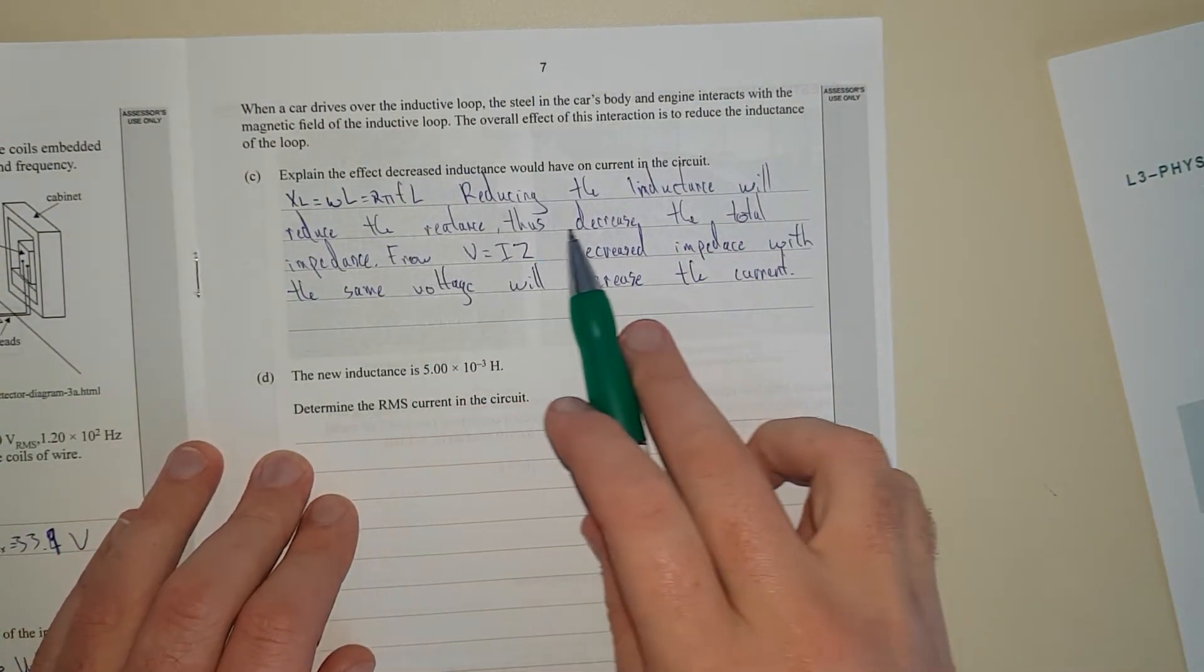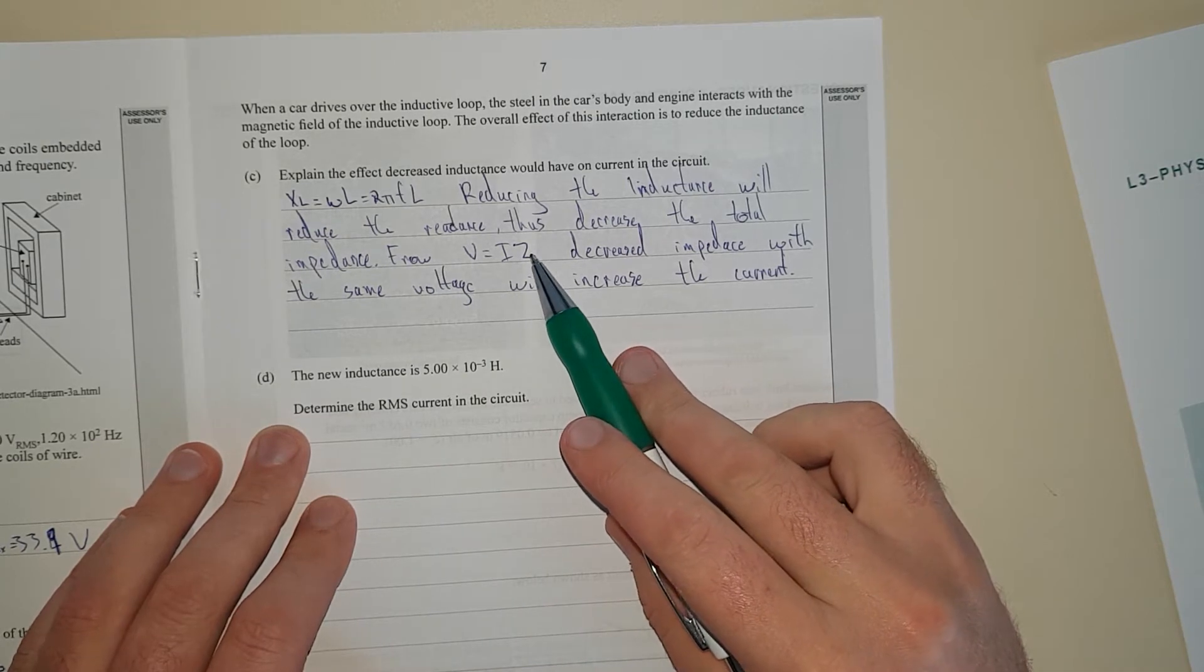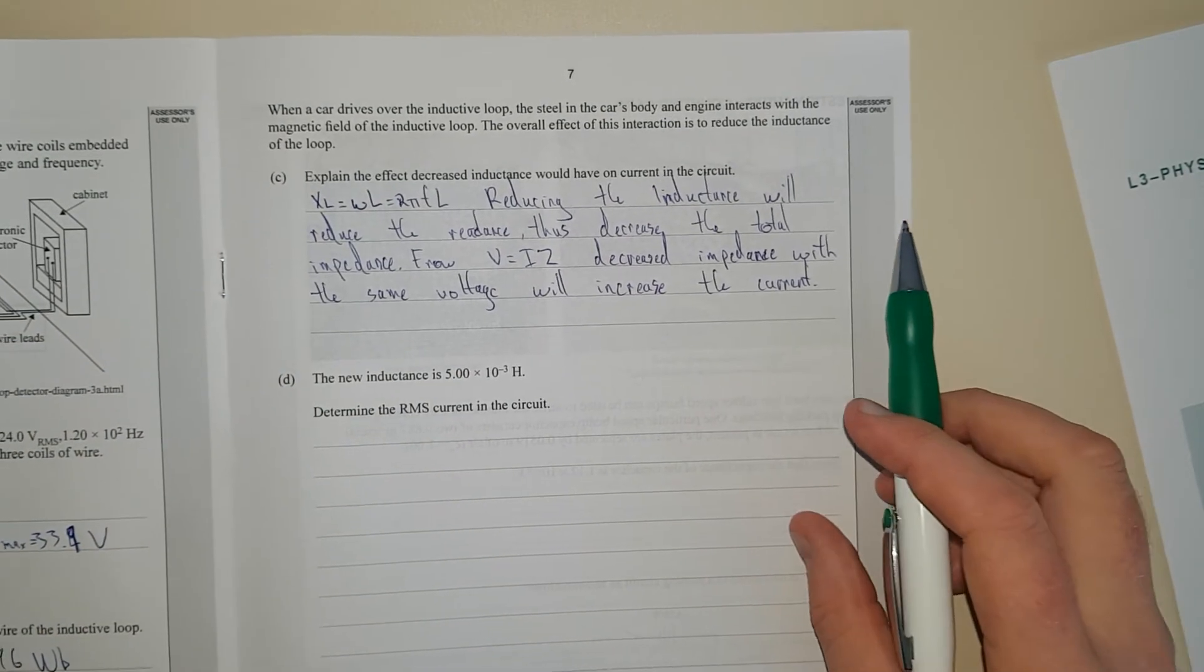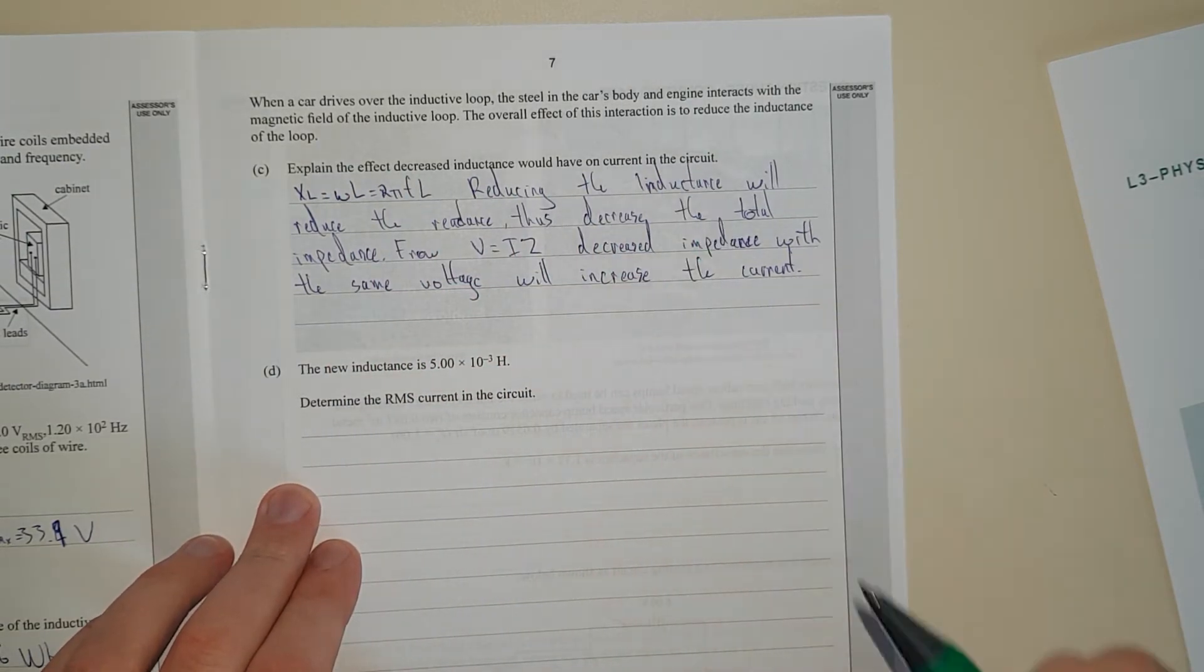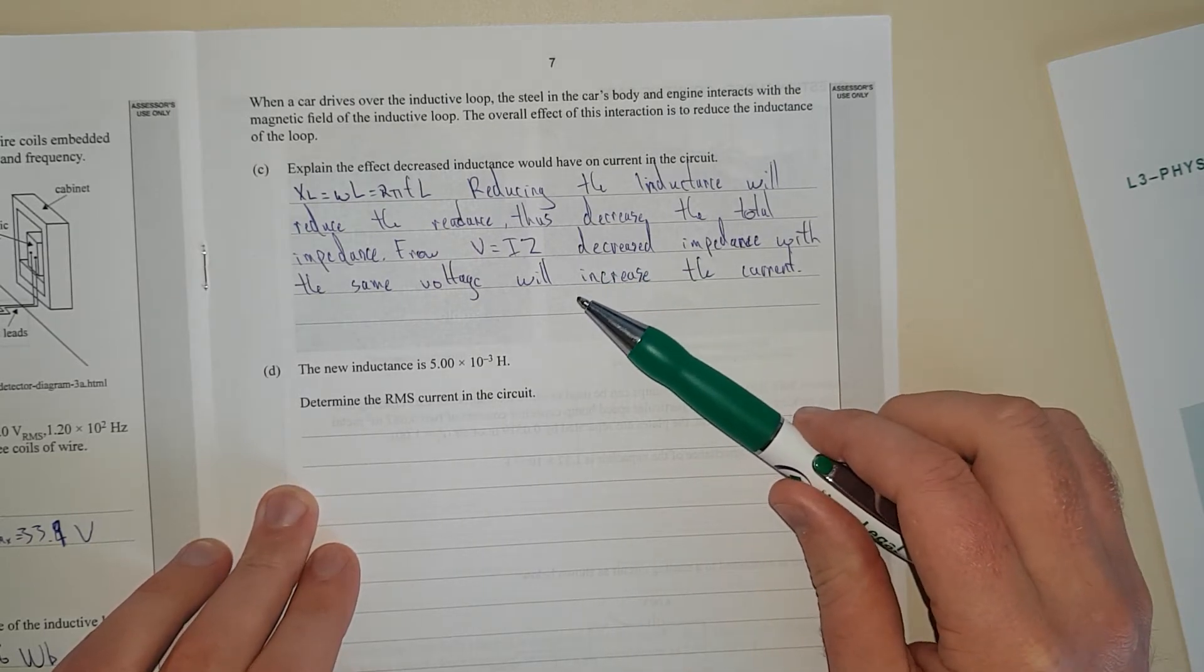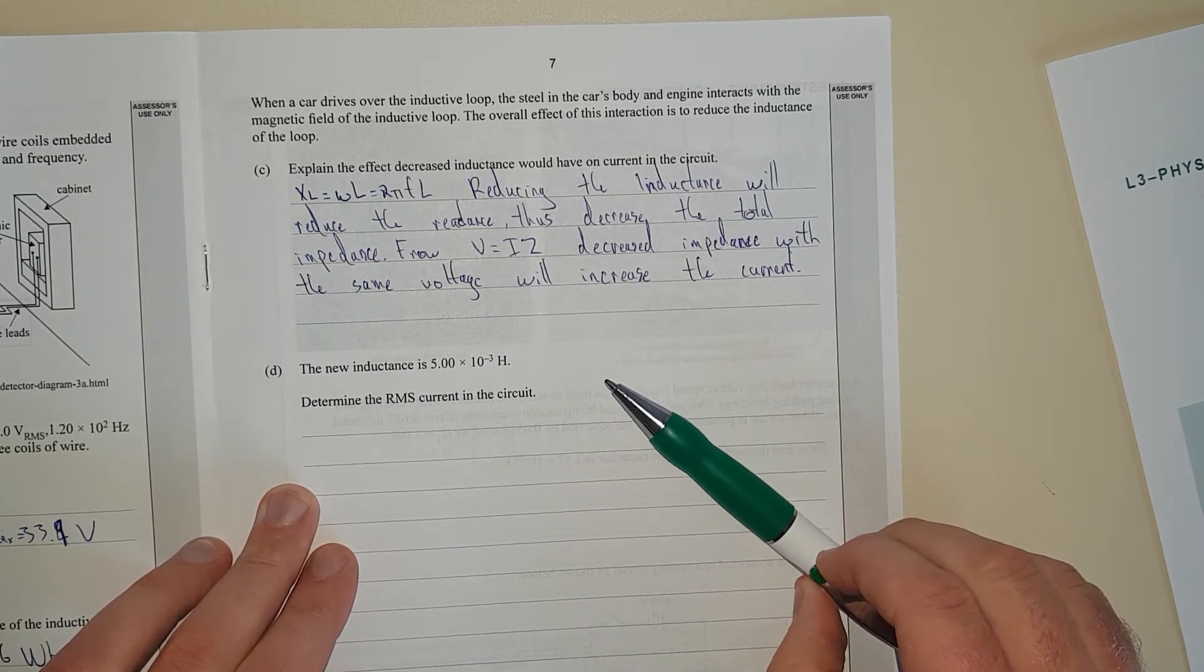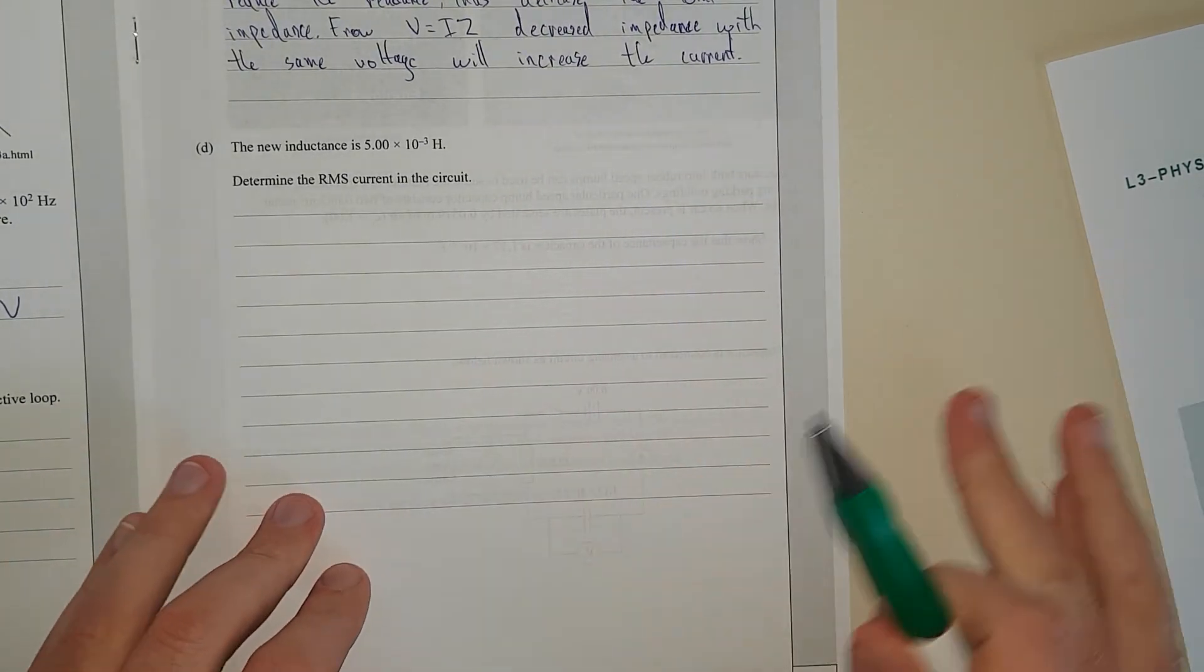I've said reducing the inductance will reduce the reactance, thus decreasing the total impedance. From voltage equals current times impedance, decreased impedance with the same voltage will increase the current. Normally, when you put iron or something ferromagnetic inside an inductive loop, it tends to increase the inductance. But if the iron's outside the magnetic loop, it gets more complicated because now you have lots of different magnetic fields interacting.